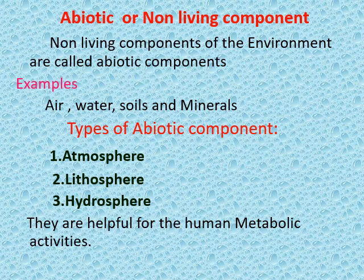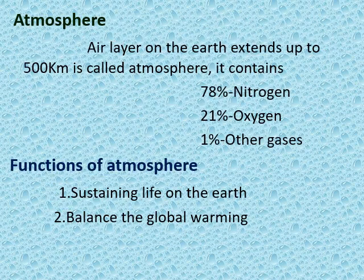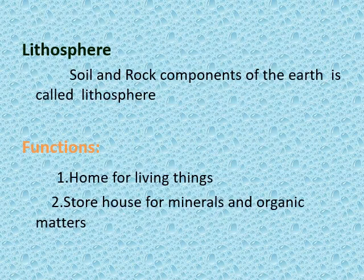Three abiotic components are atmosphere, lithosphere, and hydrosphere, which are helpful for human metabolic activities. The atmosphere is the air layer on the earth that extends up to 500 km. It contains 78% nitrogen, 21% oxygen, and 1% other gases. It is useful for sustaining life on earth and balancing global warming.